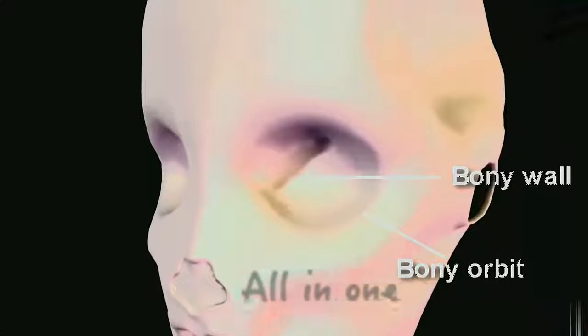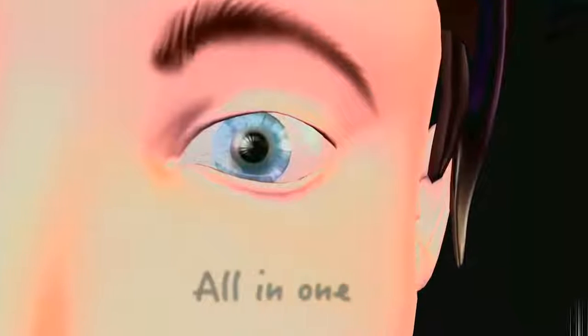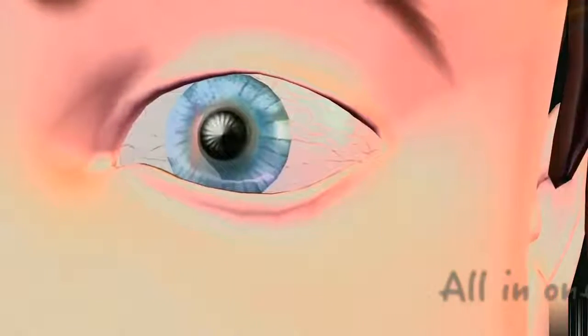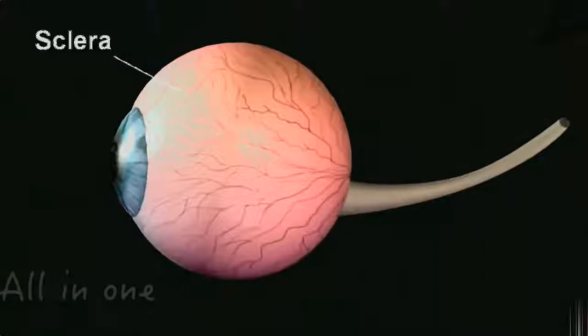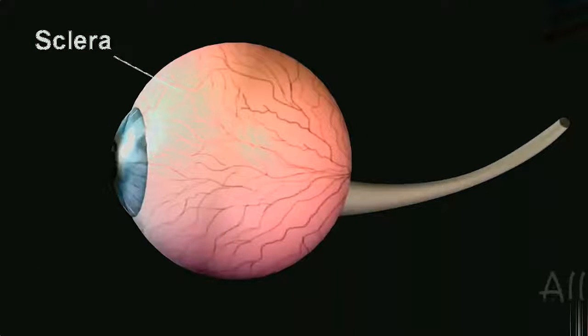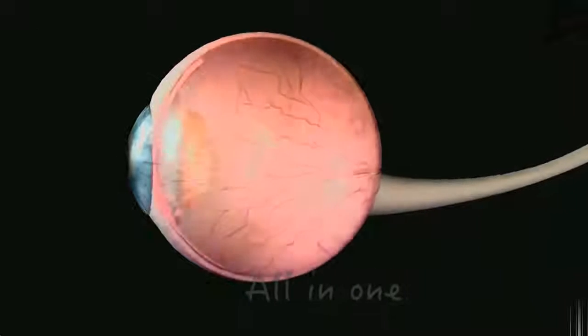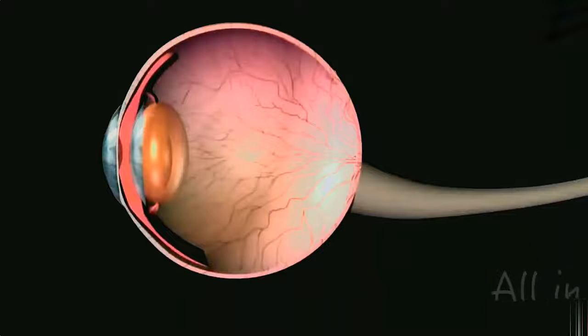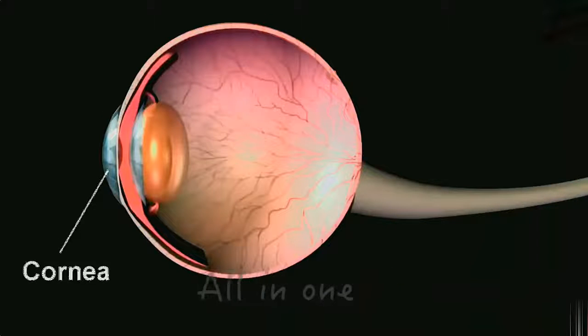The capsule of the eyeball has three layers. This thick, tough outer layer is called the sclera and serves to protect the delicate structures within. This transparent bulging portion is called the cornea.